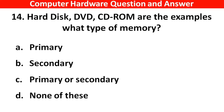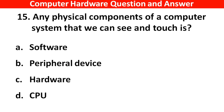Any physical components of a computer system that we can see and touch is — the right answer is Option C: Hardware.